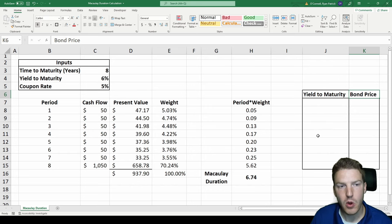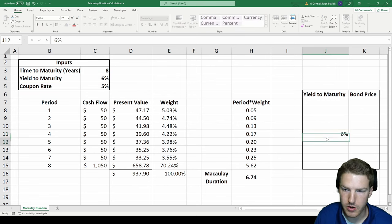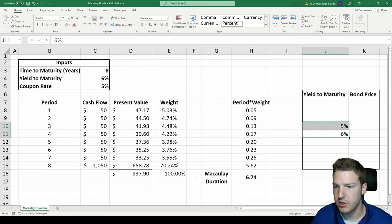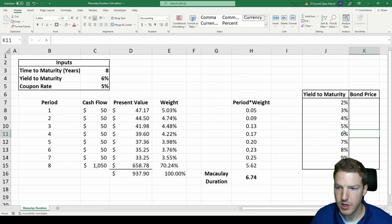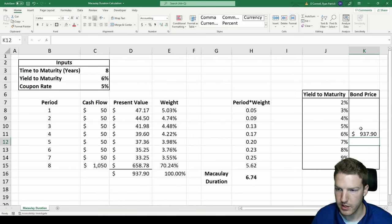So we want to plot how the bond's price changes as yields change. We started off with a yield to maturity of 6%, so we'll just put that right here. But let's see what happens when we decrease market yields down to 2% or up to 9%. So we know at 6% that the price is 937.9. We already calculated that.